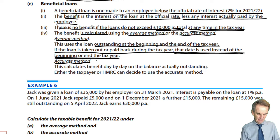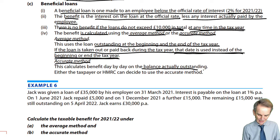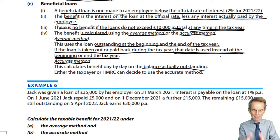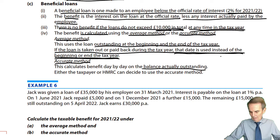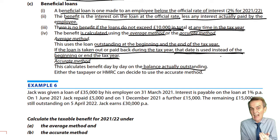The accurate method calculates the benefit month by month on the actual balance outstanding for each period. This is only an issue where repayments have occurred during the tax year. For each period, calculate the loan balance at 2% for the relevant number of months and compare it with any interest actually paid. The difference is the assessable benefit.